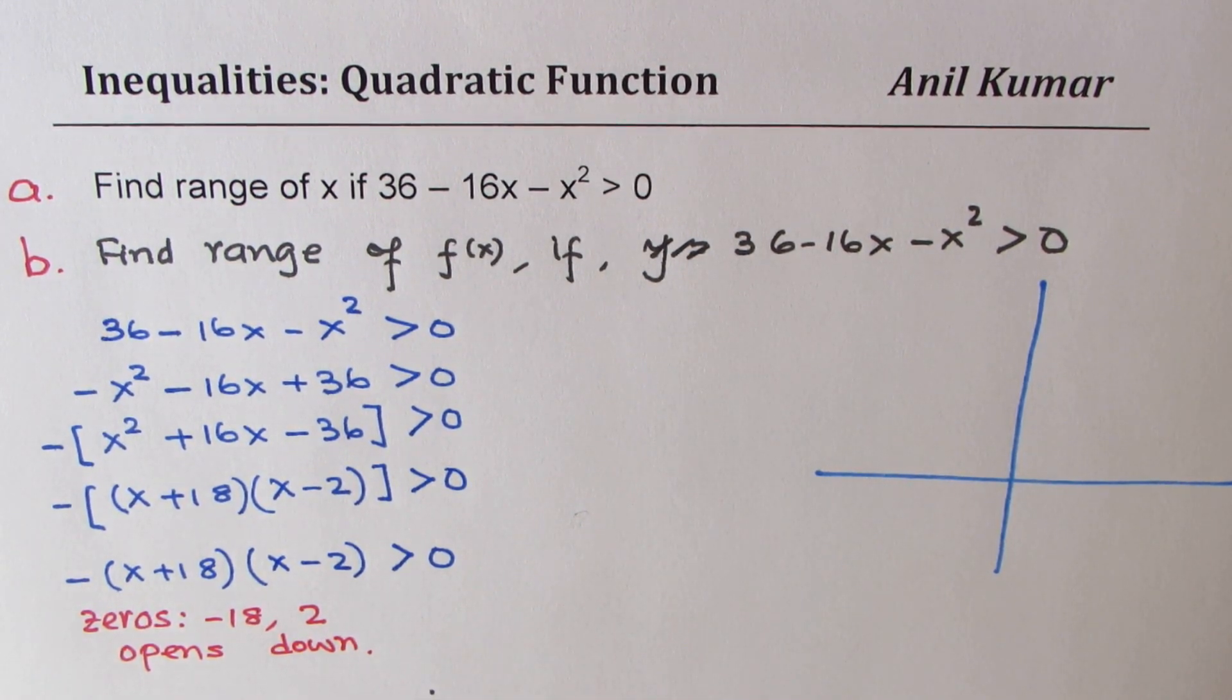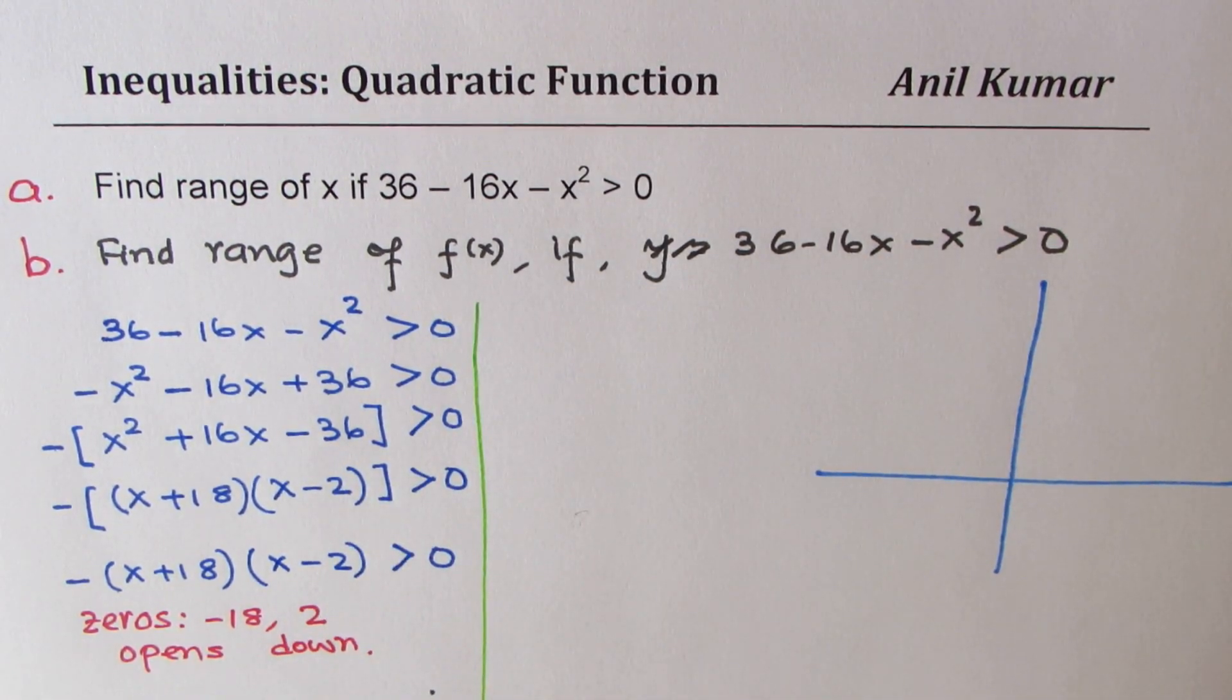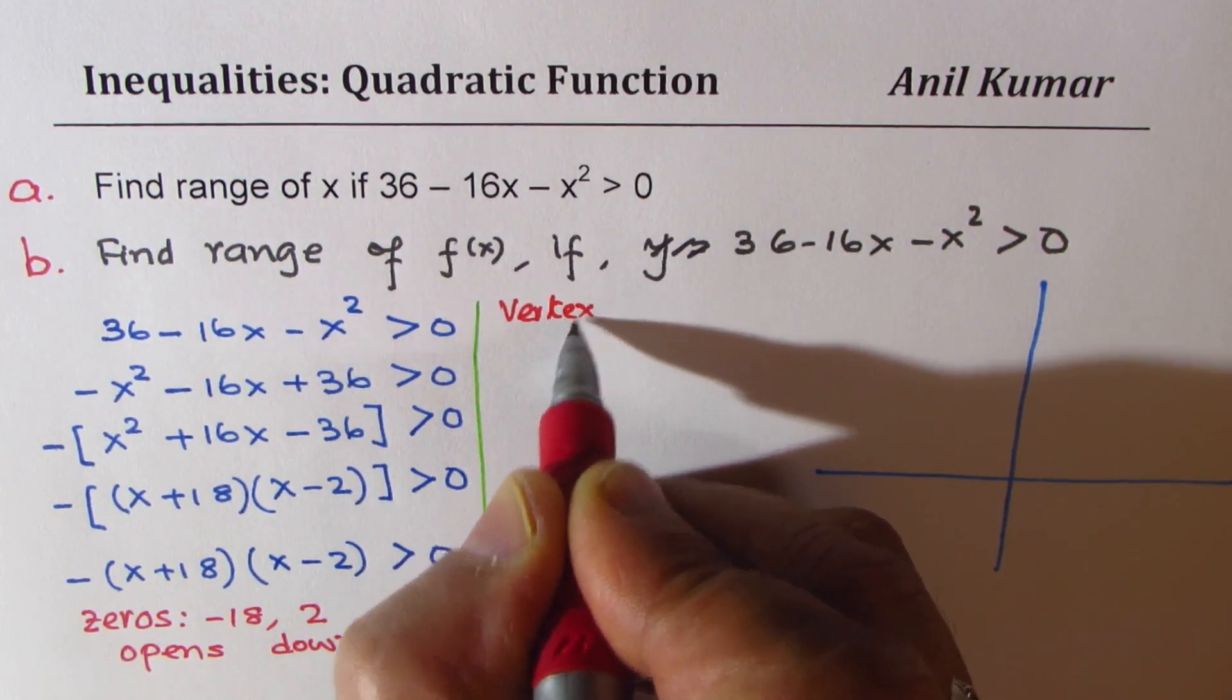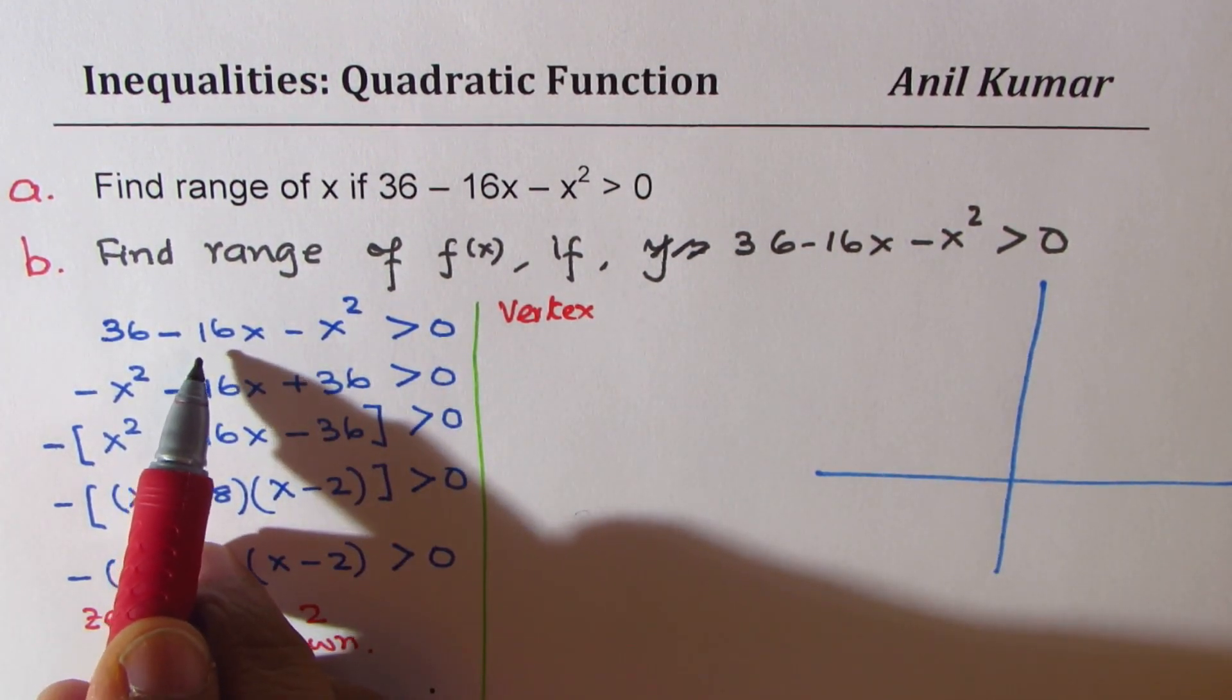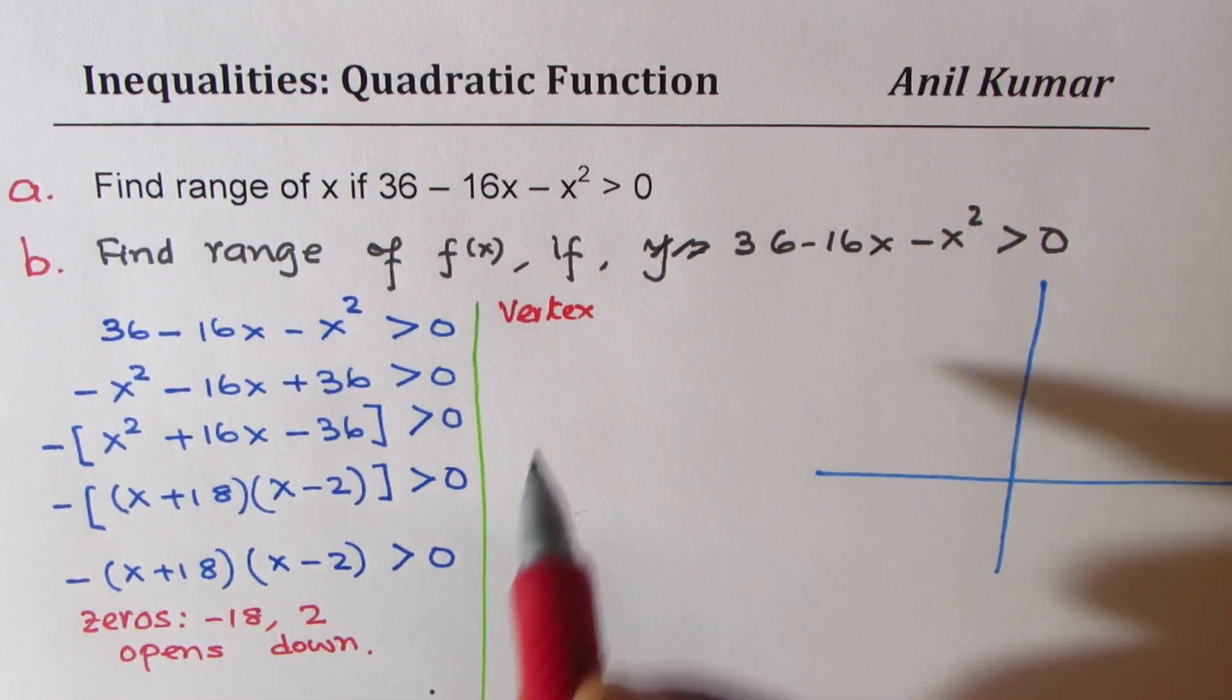So what we will do is find the vertex. Vertex will be at minus b by 2a, or you can say midway between them.